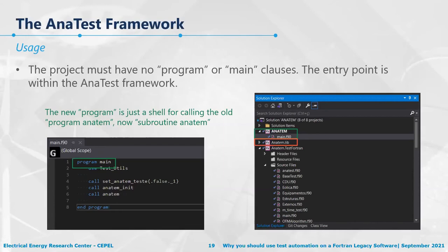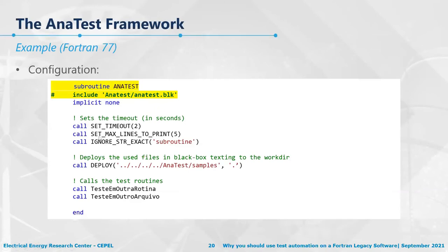In C++, the test macro works like a function and auto-registers the test without needing to call it explicitly, which is a nice language advantage. You then write the other functions and markers to group and run the tests. The subroutine 'on_a_test' includes the framework header, functions to set the timeout, set the black box testing limits, ignore certain strings in black box comparison, deploy files for testing into the working directory, and calls the test routines that were implemented.